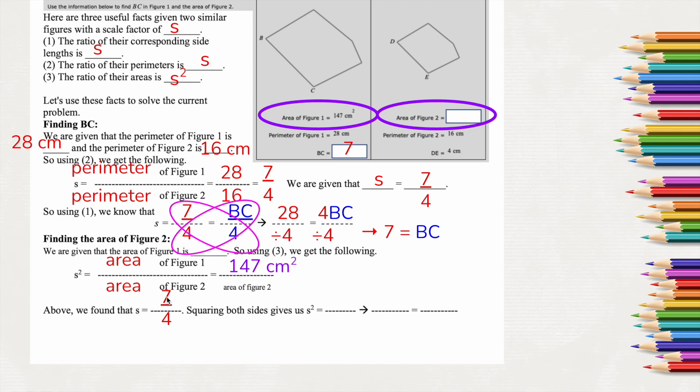But I do have to square my scale factor. So 7 fourths is going to turn into 7 squared and 4 squared, which is 49 over 16. So I didn't want to just jump over here. I wanted to show you I'm squaring them. So it's 7 times 7 and 4 times 4. We get 49 over 16.